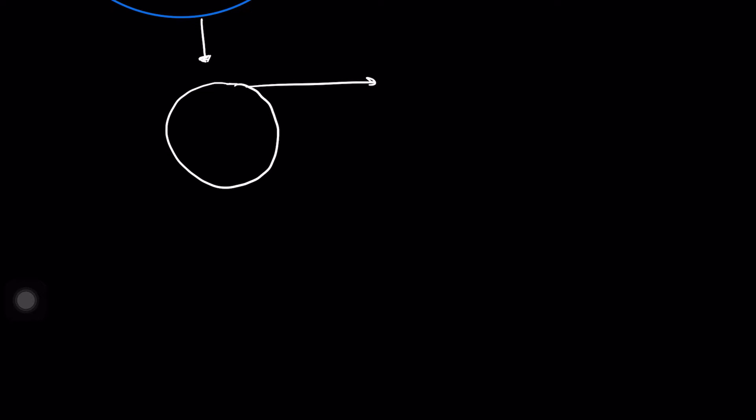Now if we zoom into these shells, they are divided into something called subshells. Using an electron microscope, what scientists figured out is that electrons tend to stay in different regions within the shell. So let's say this circle is my region — this is the shell.